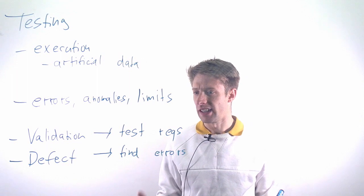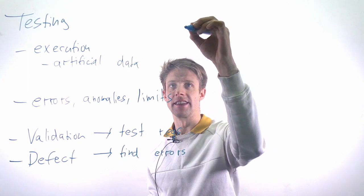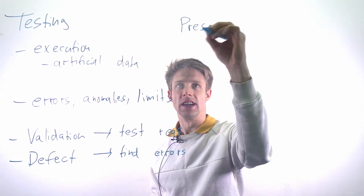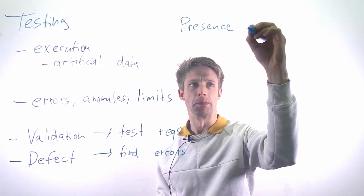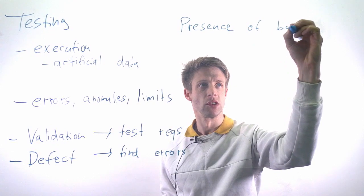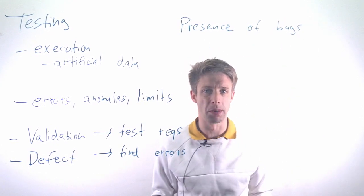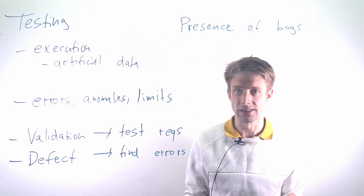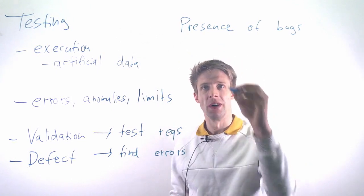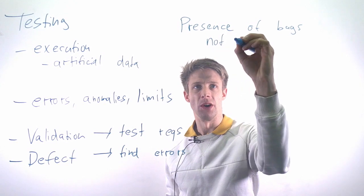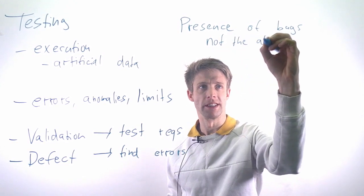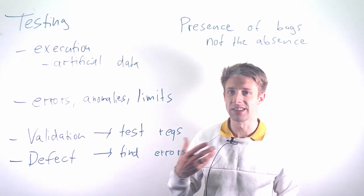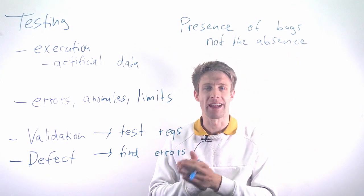There's a classic quote by Dijkstra which is important in this context: All you ever show in testing is the presence of bugs. You can only show if there is a bug. If everything works, you don't know whether there are any bugs in the system or you just haven't found them. You can never show the absence of bugs.